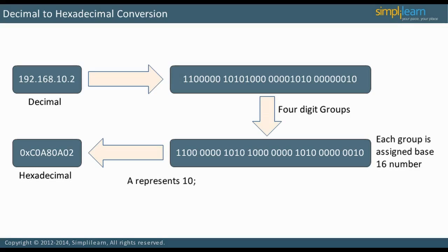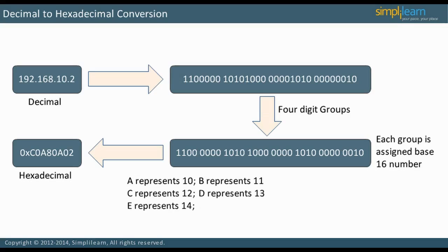The first group of digits in the address is 12, which is hexadecimal C. The second group is 0. The third group is 10, which is hexadecimal A. The fourth group is 8, which is the same in hexadecimal, and so on. Therefore, the address is represented in hexadecimal as C0A80A02. The prefix 0x means hexadecimal.